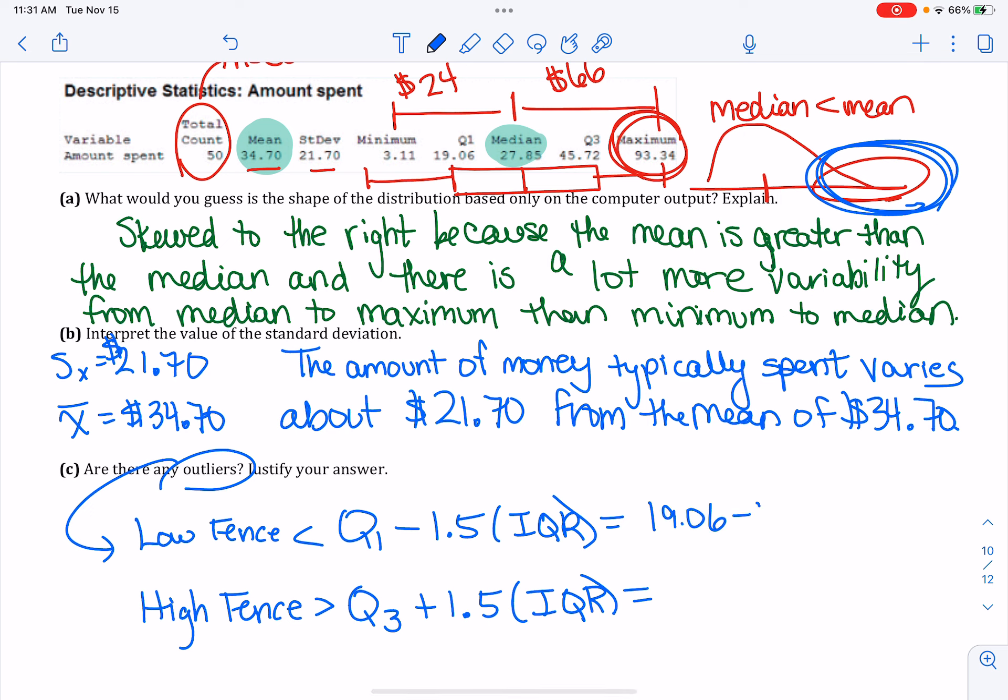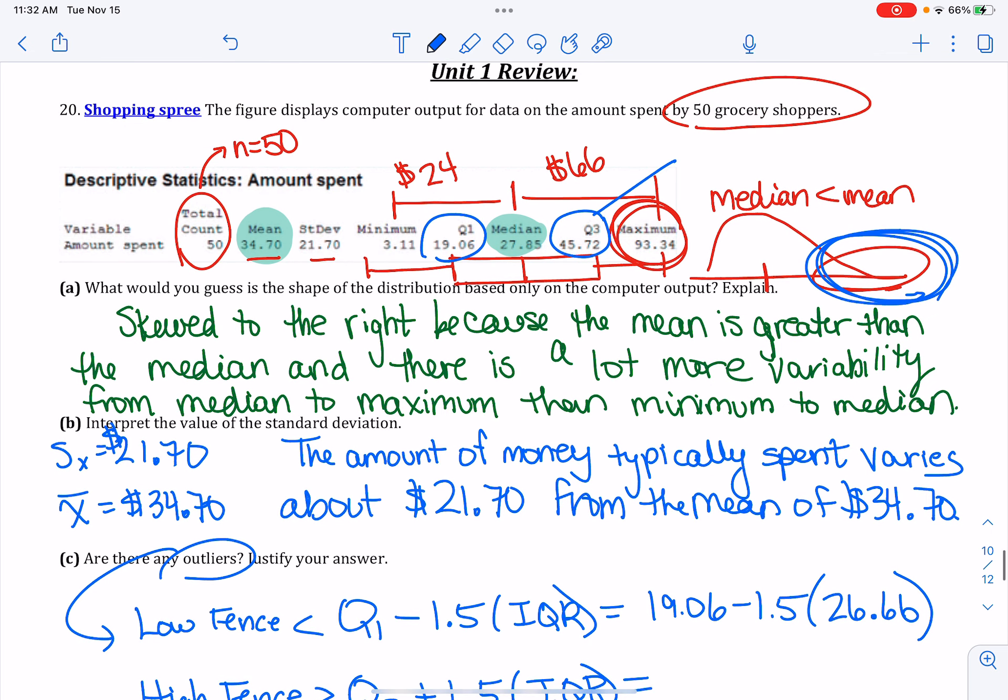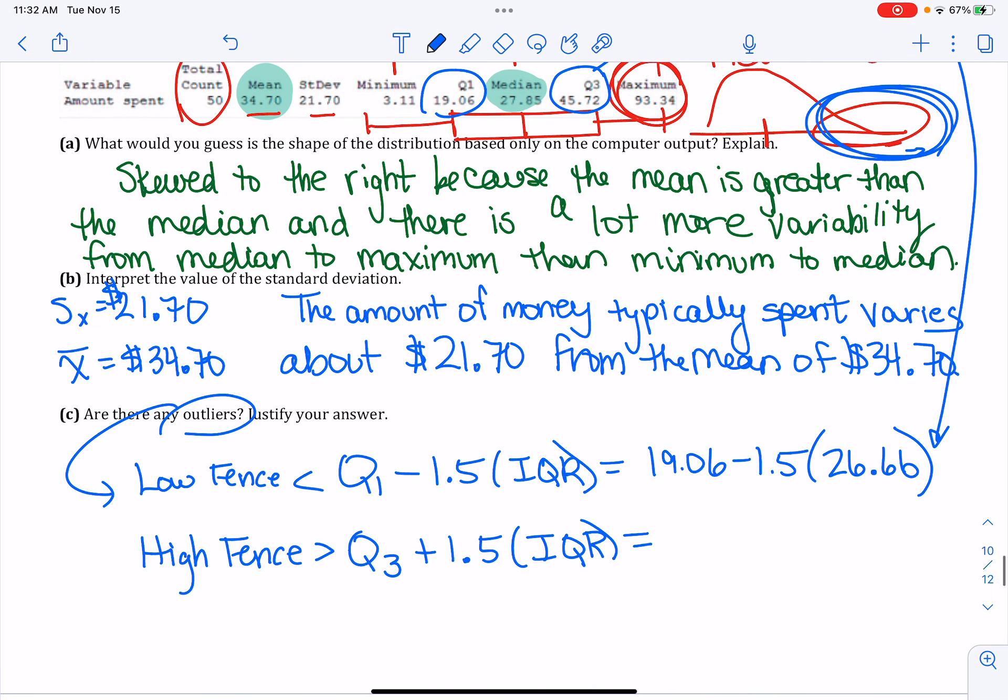So quartile 1, 19.06 minus 1.5 times the IQR. IQR is 26.66. And I didn't do that calculation, but I'll do that right up here for you, too. Q3 minus Q1 is 26.66. So that's where we get IQR down here. So I'm looking for values that are below negative 20.93. And, of course, you can't spend negative money at the grocery store. You cannot credit yourself. I wish we could.